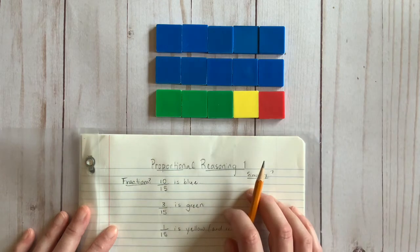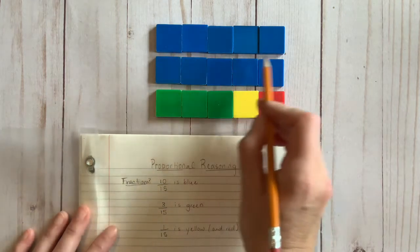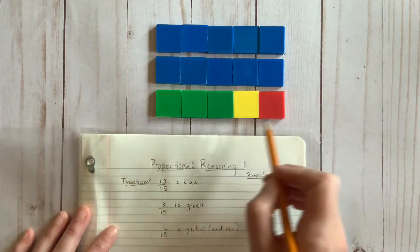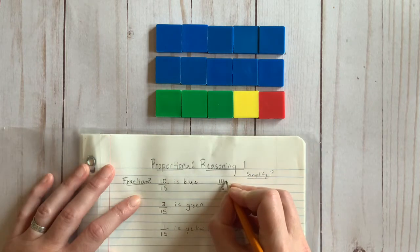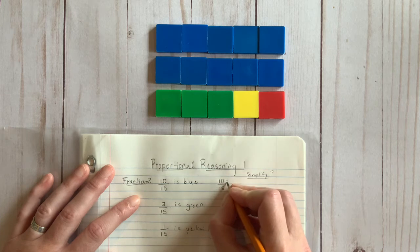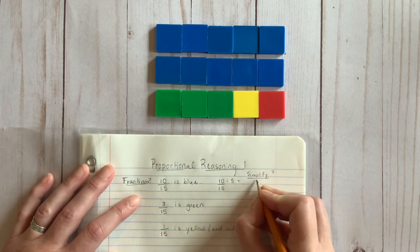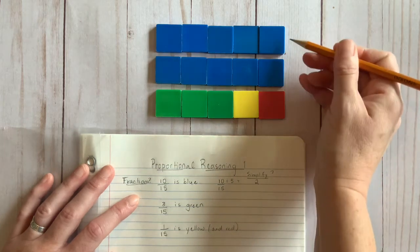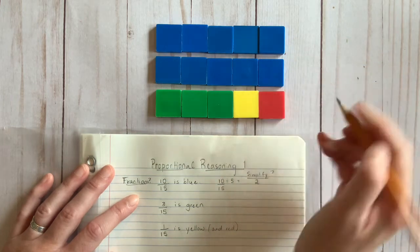After counting the new groupings, the new equivalent fraction is two-thirds. You can also use an equation to show that you divided the part and the whole into groups of five in this case. How many groups were formed? When I divide the numerator into groupings of five, I end up with two groups.